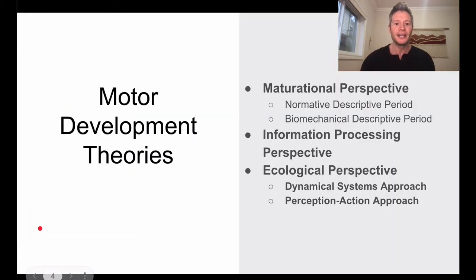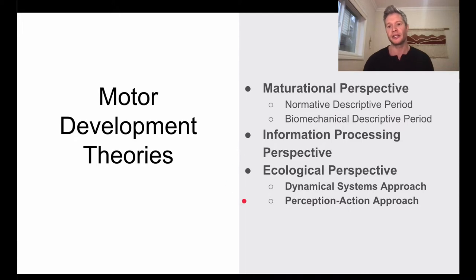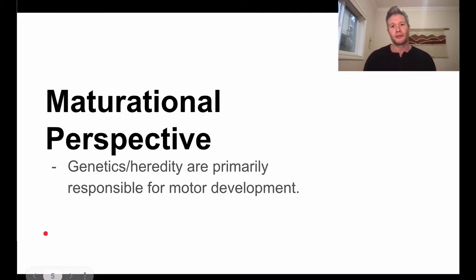For motor development, we have three main theoretical perspectives. The maturational perspective is very biologically based. Then we have information processing, which is more cognitively based. Finally, there's the ecological perspective, which largely pulls from Newell's model that you learned about in the last lecture.